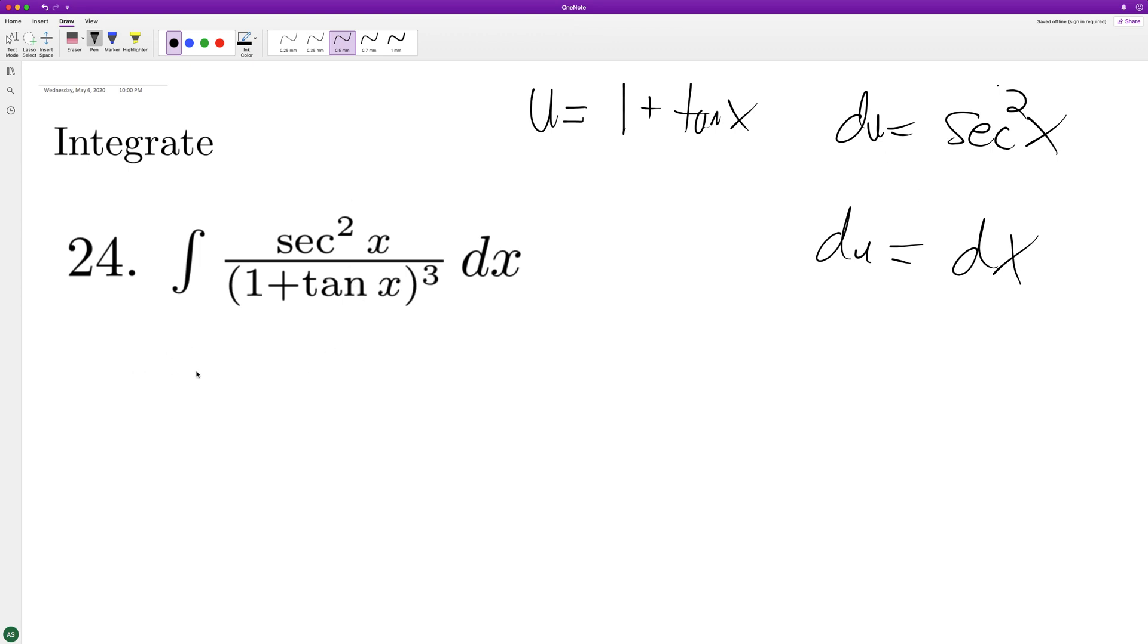So what happens here is we have the integral of u raised to the negative third du. And when we integrate, we've got everything here. We add 1 to it. So we go u raised to negative 2 over negative 2.